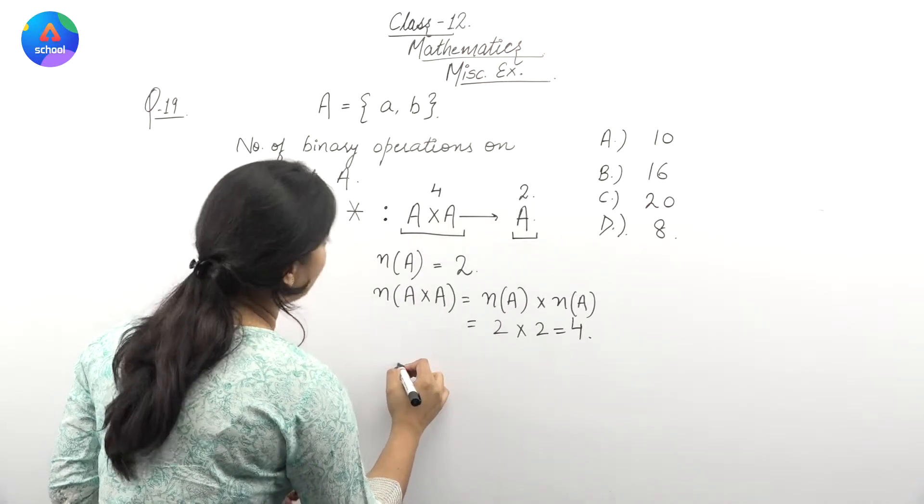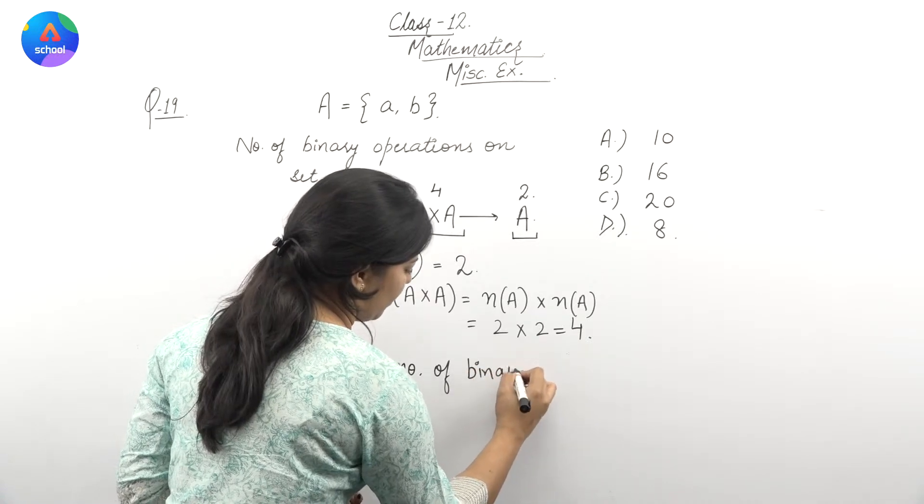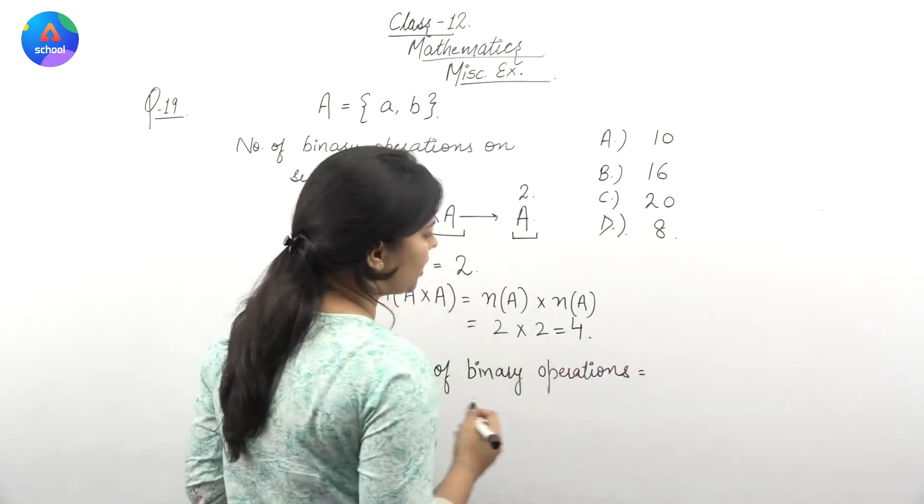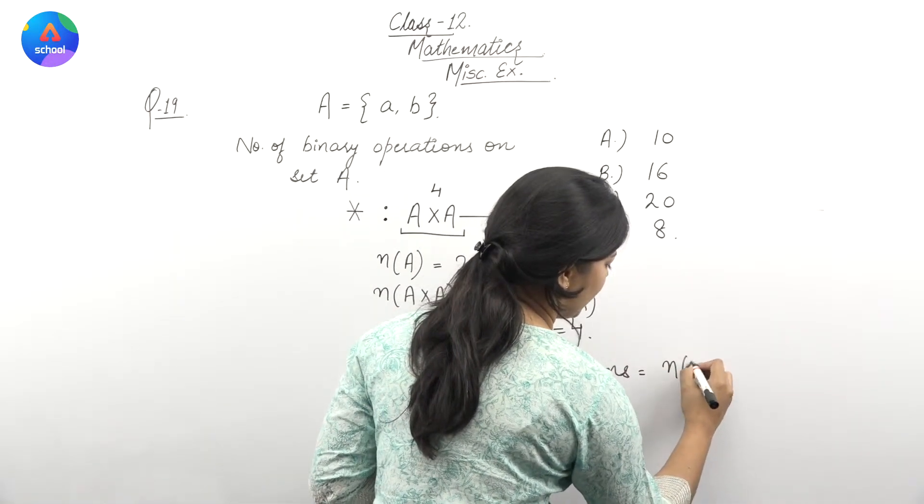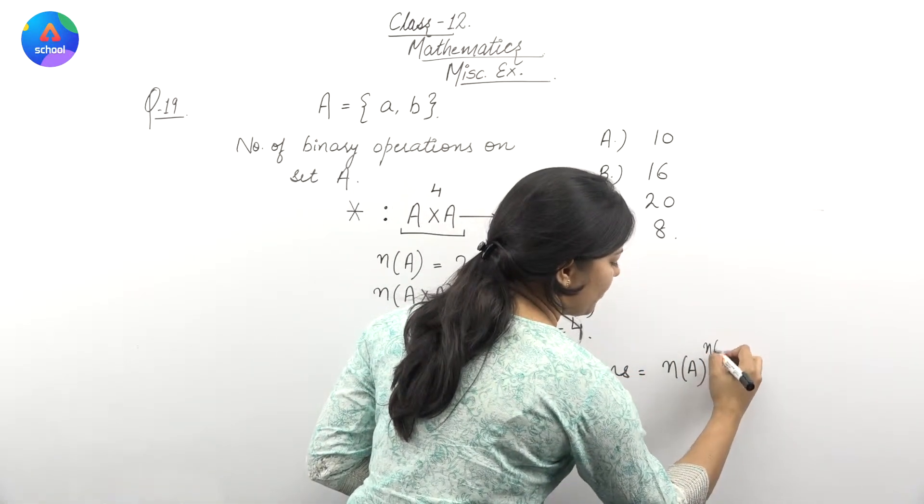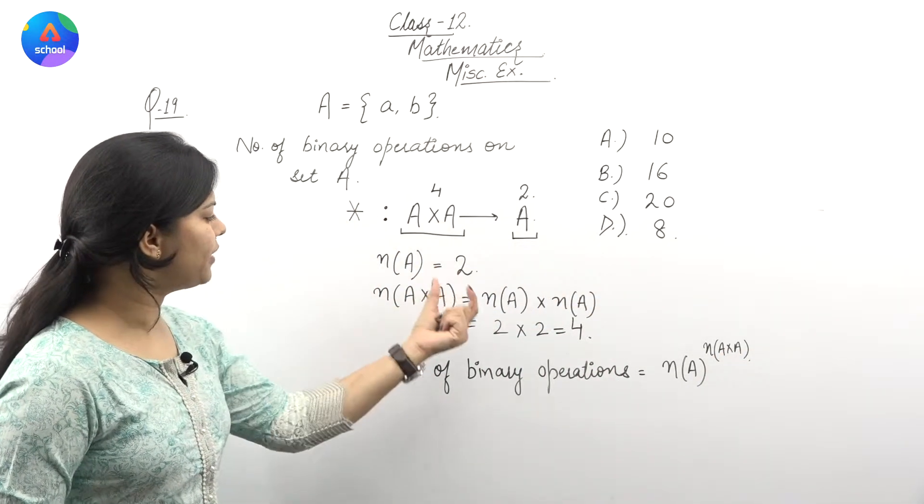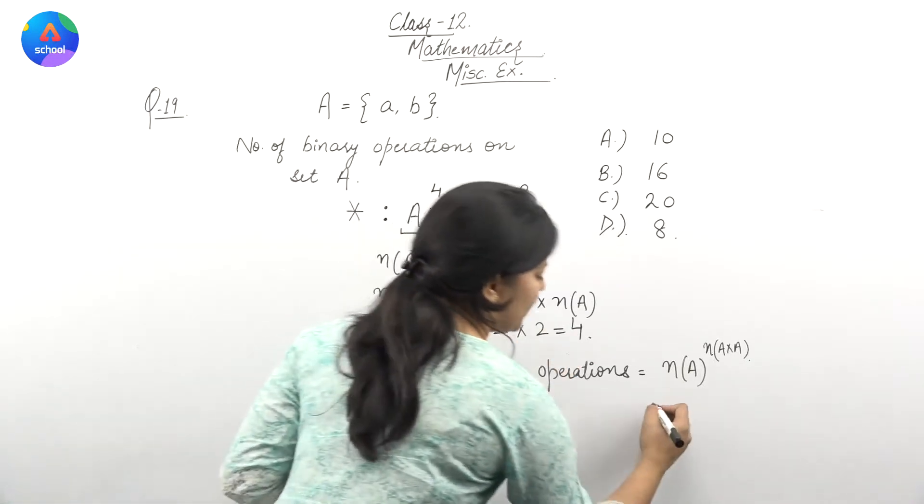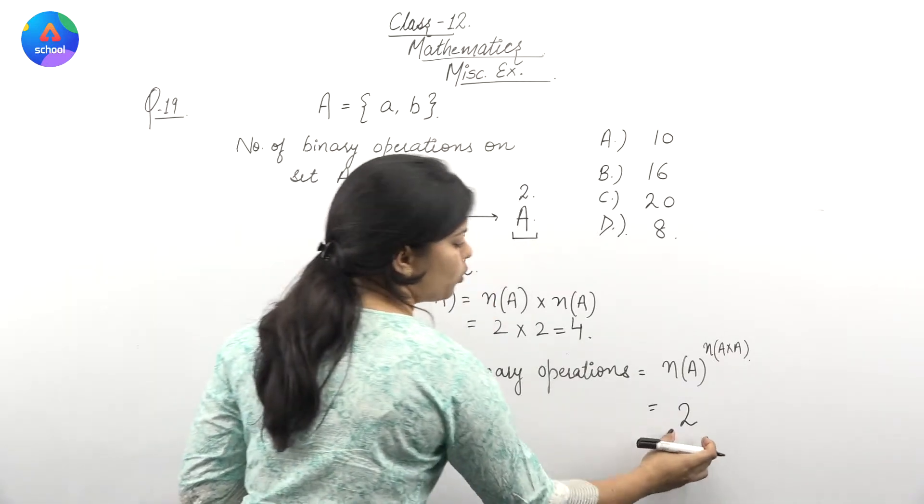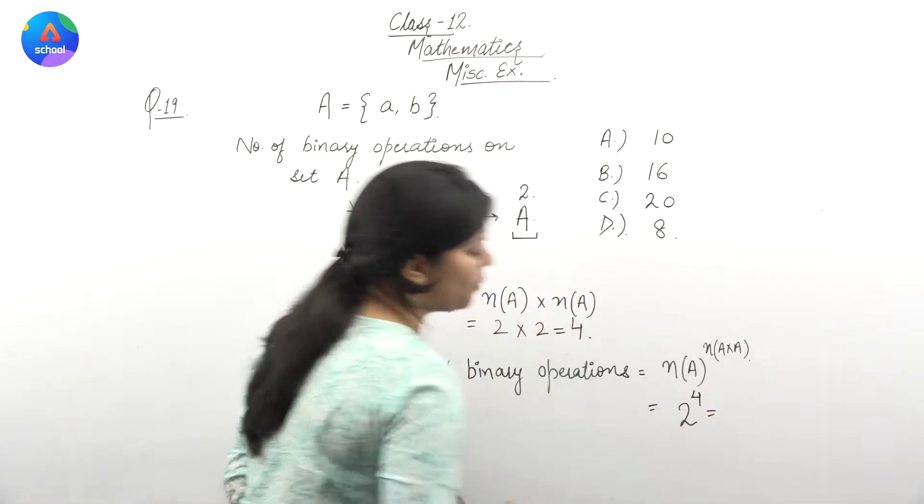So the number of binary operations will be: number of elements in A raised to the power of number of elements in A cross A. Let me write it down - we have found both these values. Number of elements in A is 2, and the power is number of elements in A cross A, that is 4. So 2 raised to the power 4 is our answer.